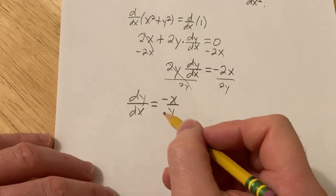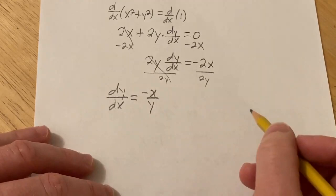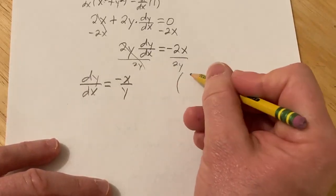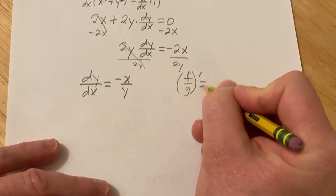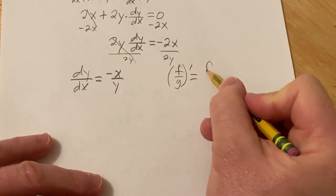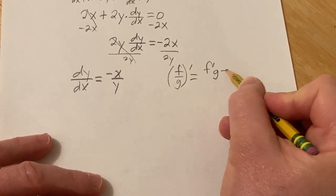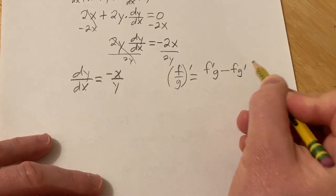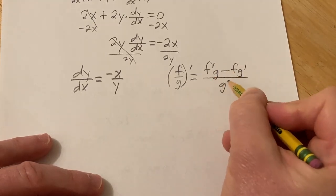Alright, so now we're going to find the derivative. Again, we're going to use the quotient rule. Recall that if you have a quotient, say, f over g, and you take the derivative, the formula says it's the derivative of the top times the bottom minus the top times the derivative of the bottom, all over the bottom one squared.